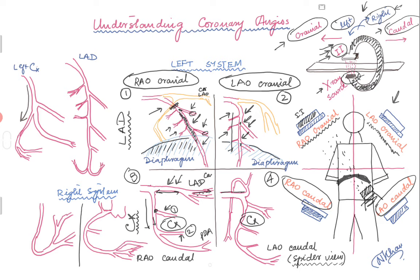Image 4 is the LAO caudal view, also known as the spider view. The spider view is very good for looking at the left main and nicely opens up the bifurcation. If you have ostial LAD or ostial circumflex disease, this is the best view. The diagonals are around the two o'clock position, the LAD goes away from you, and the circumflex comes down. When performing the spider view, we focus primarily on the left main, ostial LAD, and ostial circumflex.